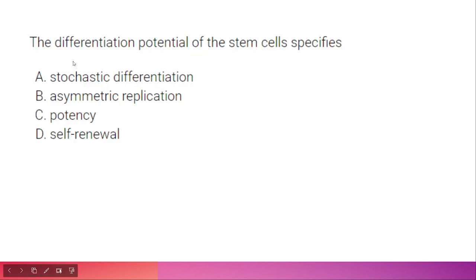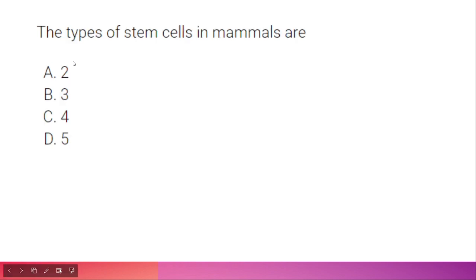The differentiation potential of a stem cell specifies its potency. The options were stochastic differentiation, asymmetric replication potential, self-renewal, and potency. The correct option is C: potency. The types of stem cells in mammals are two: embryonic stem cells and adult stem cells.